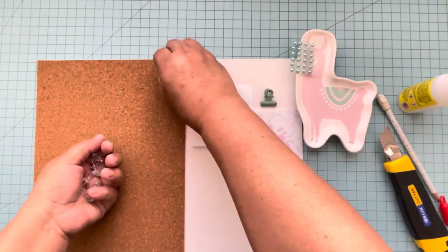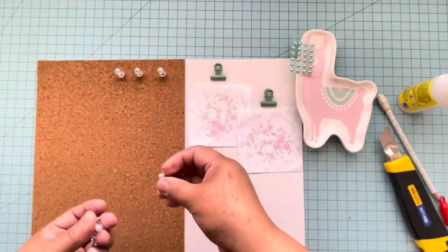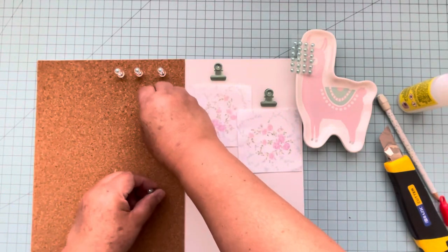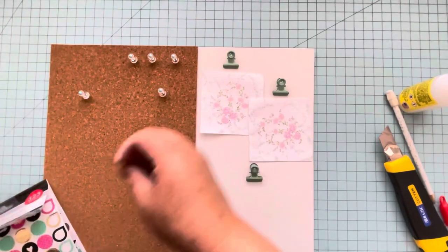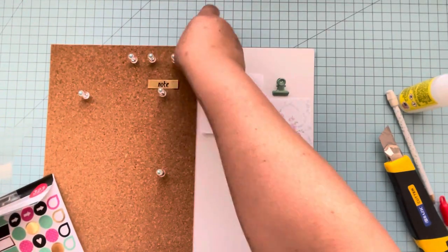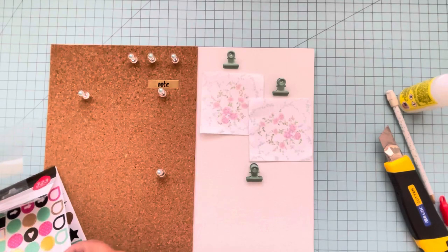So I can be ready to put the memo pads. Also, I'm going to embellish with these planner stickers from Dollar Tree, and you can remove them at any time.